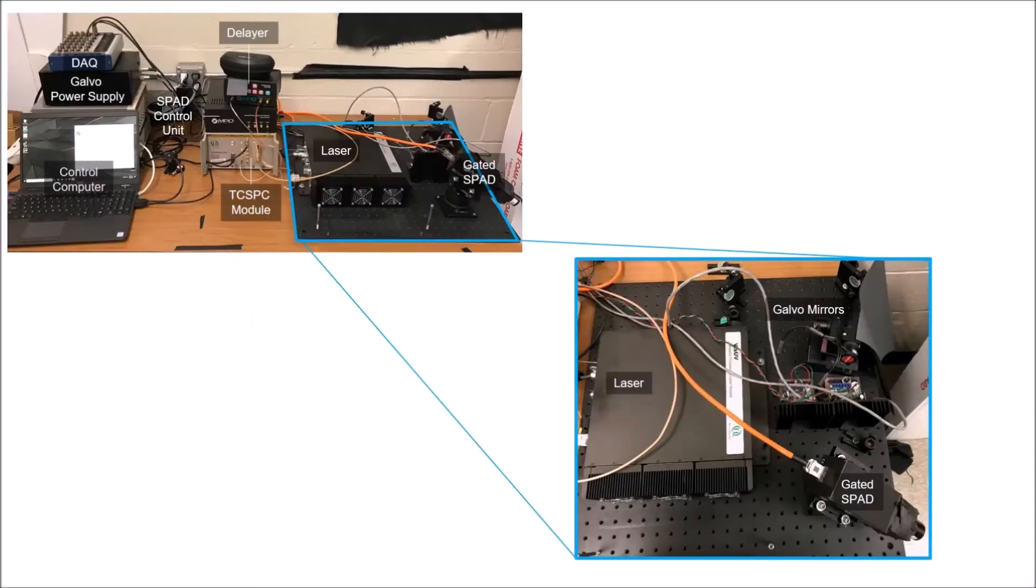The equipment used to perform this experiment is shown here. A 532 nanometer wavelength pulsed laser is directed by galvo mirrors to the correct position on the floor along the arc. Each laser pulse may result in some photons returning to the gated SPAD detector.